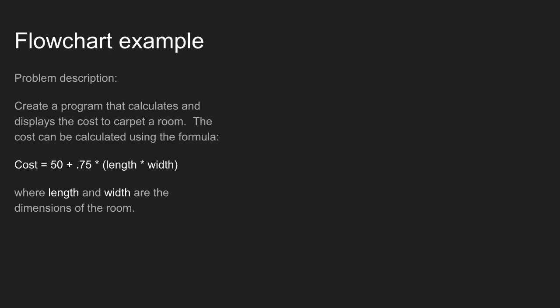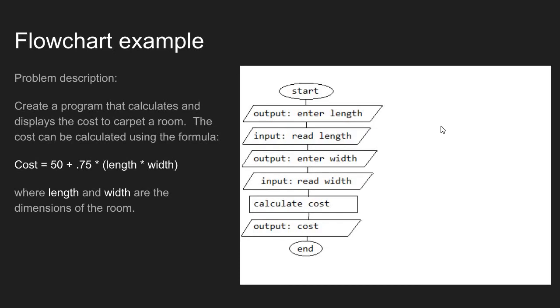Let's look at an example. Let's say we are to create a program that calculates and displays the cost to carpet a room. The cost calculation has a formula that's given here based on a length and width value, where the length and width are dimensions of the room. So how might we design an algorithm to solve this problem?